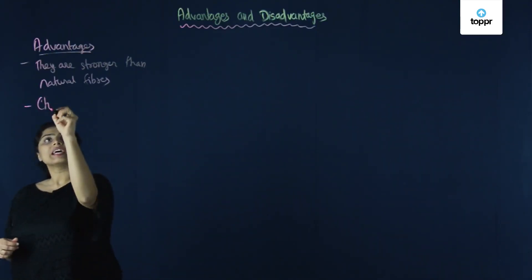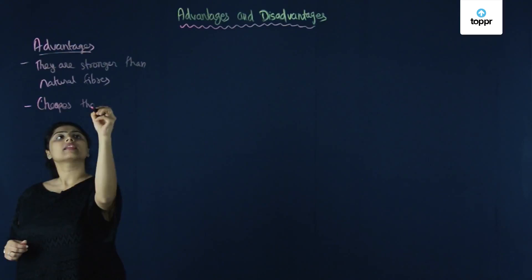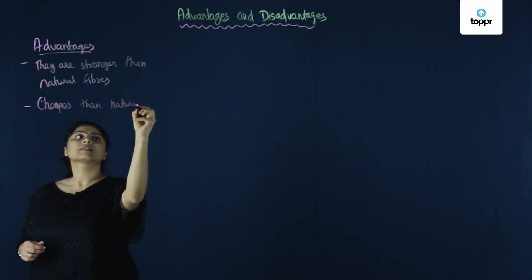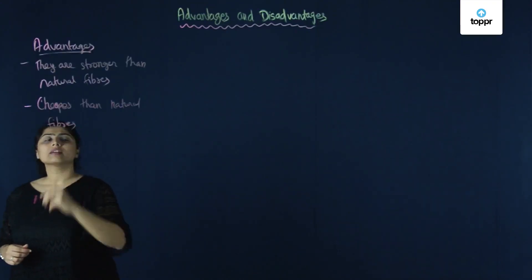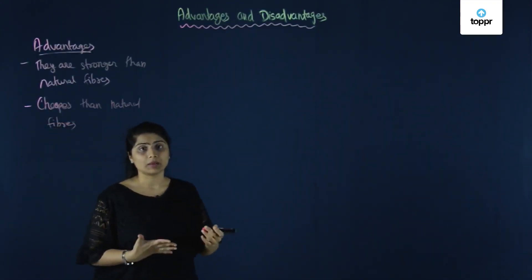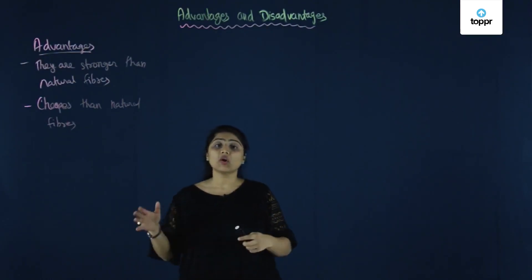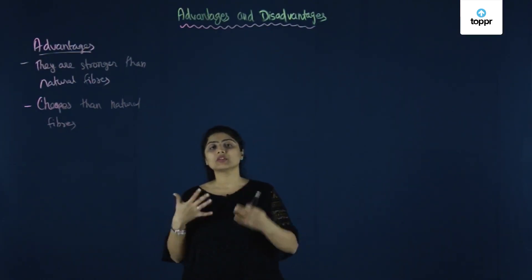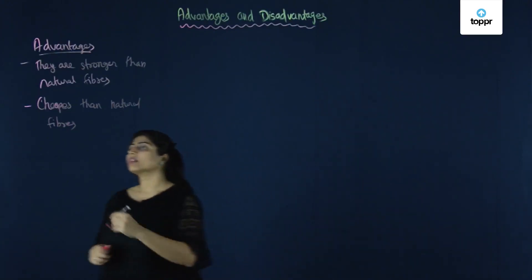The second advantage is that they are cheaper than natural fibers. Natural fibers might be very costly, like the silk fiber. At the same time, when you talk about rayon, rayon is comparatively cheaper though it has the appearance of silk. Let's talk about the third one.